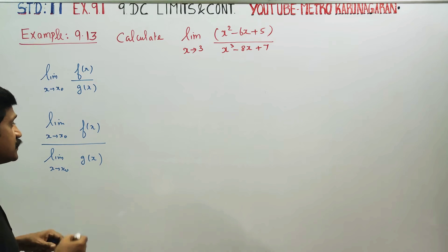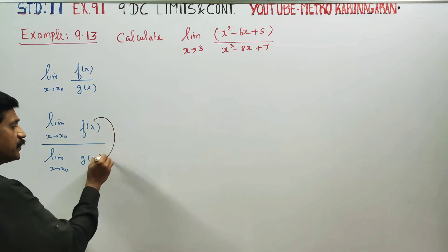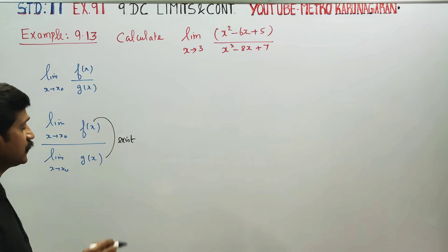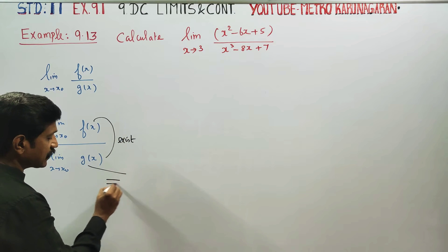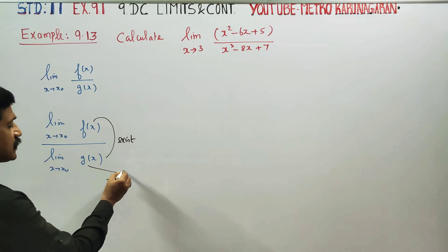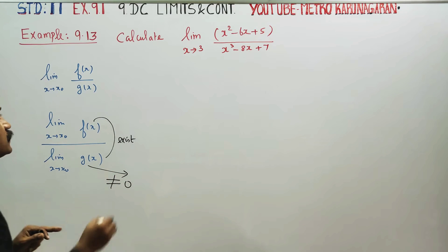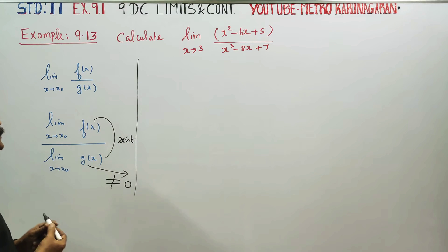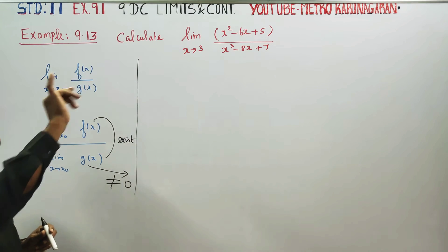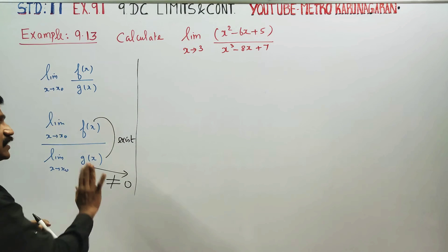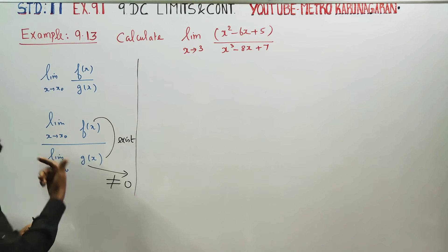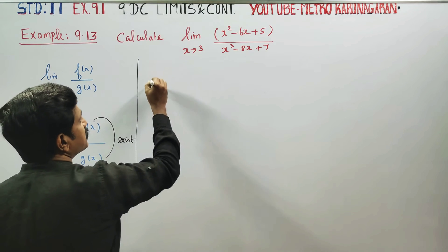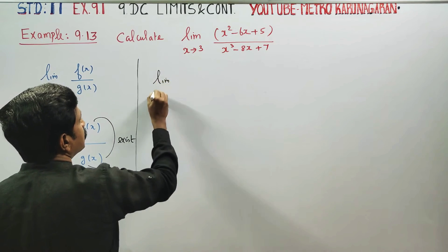The condition is that both limits must exist, and the denominator's answer cannot be zero. If these conditions are satisfied, then you can find the numerator and denominator limits separately.